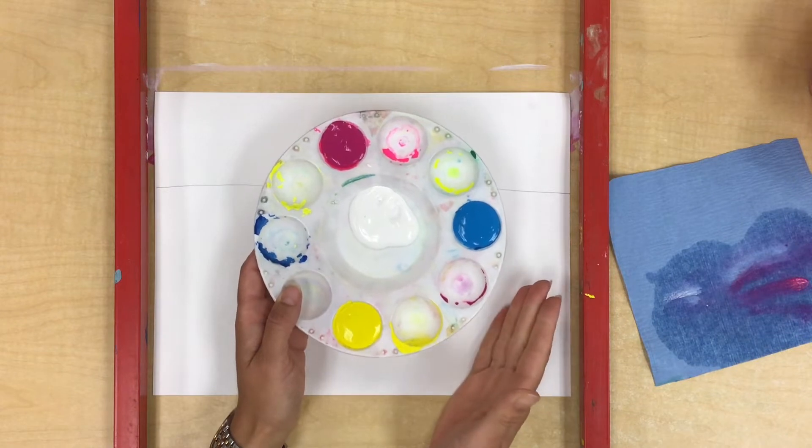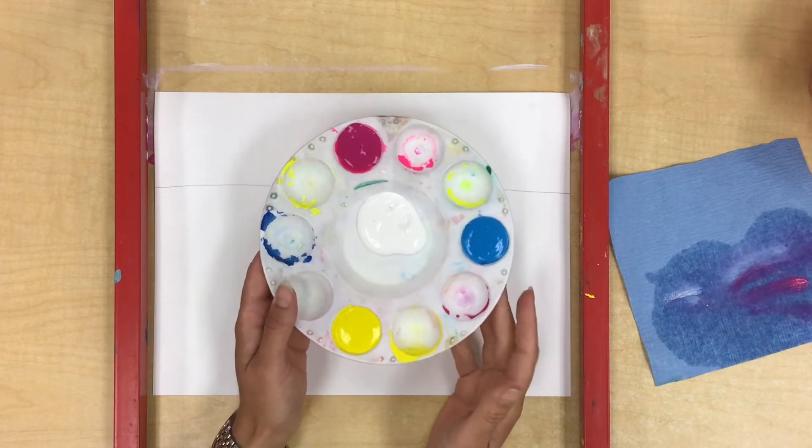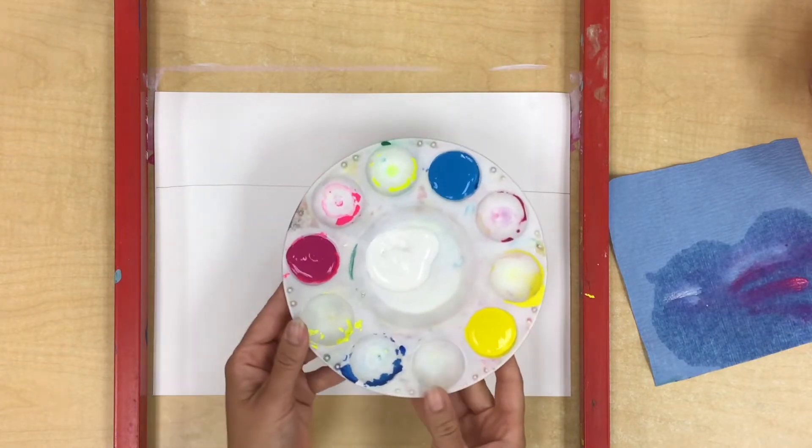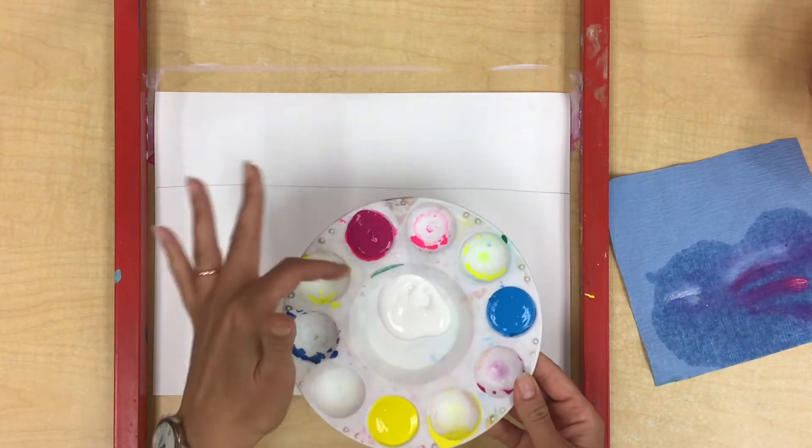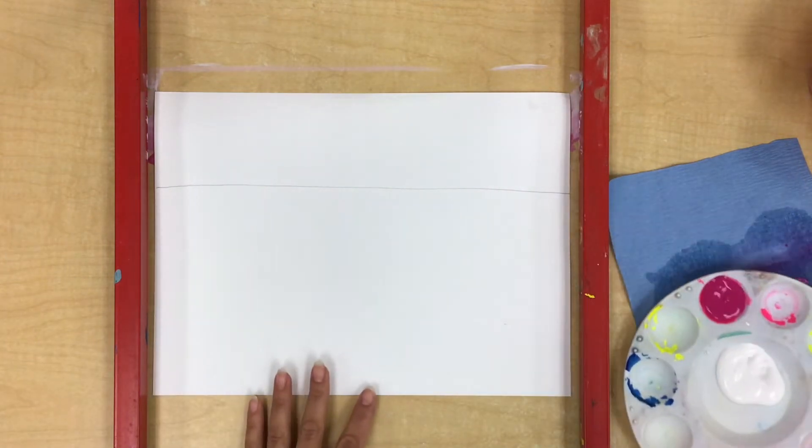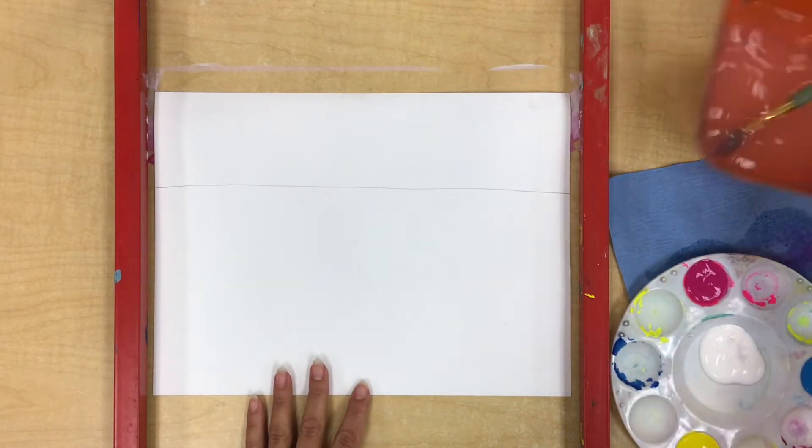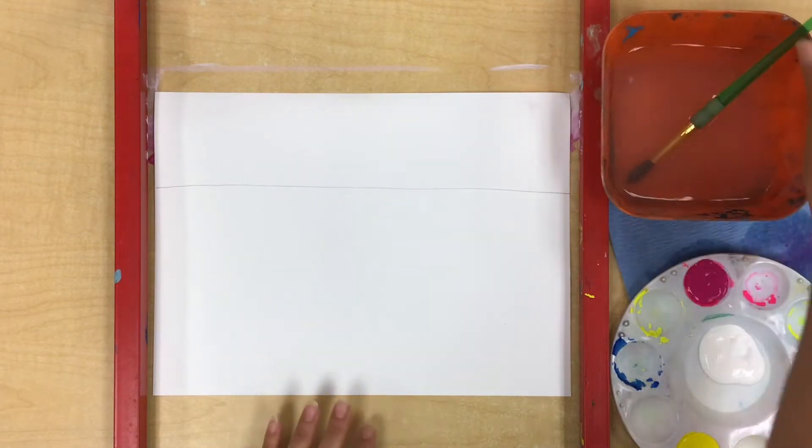So choose one color that you want to use for your sky. I actually think that I'm going to do, I want it to look kind of sunset-ish so I'm going to do this pink color today. We're also going to have water, a brush, and a towel.